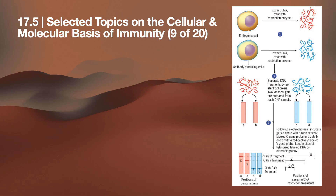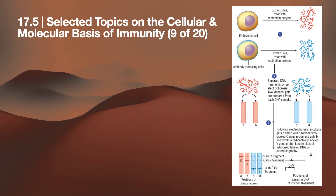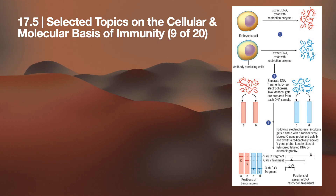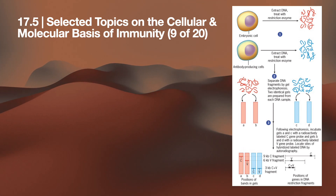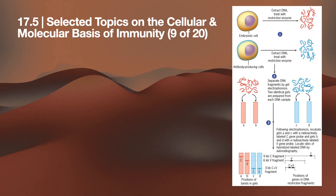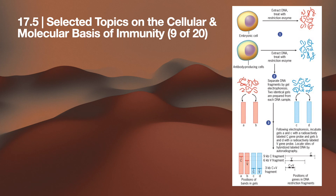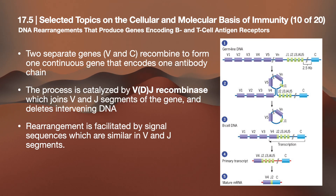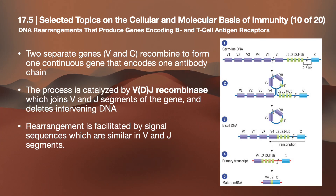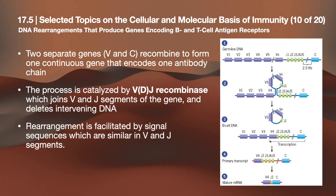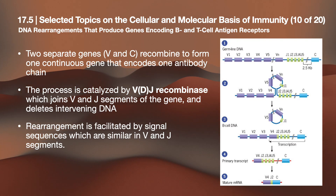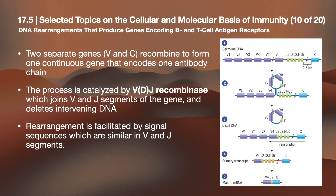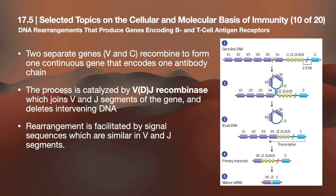The gel results show C and V gene positions in DNA restriction fragments: nine kilobase pairs for the C fragment, six kilobase pairs for the V fragment, and three kilobase pairs for C plus V combined fragments. Two separate genes — V and C — were combined to form one continuous gene encoding one antibody chain. This process is catalyzed by VDJ recombinase, an enzyme that joins the V and J segments and deletes intervening DNA. Rearrangement is facilitated by signal sequences that are similar in V and J segments.